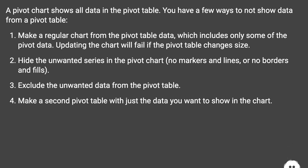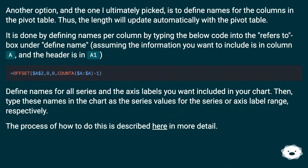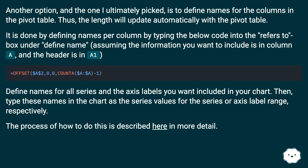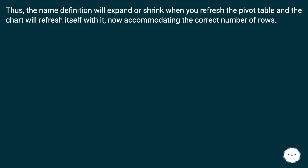Another option — and the one ultimately recommended — is to define names for the columns in the pivot table, so the length will update automatically with the pivot table. This is done by defining names per column, typing the appropriate formula into the 'refers to' box under Define Name, assuming the data is in column A with the header in A1. Define names for all series and axis labels you want in the chart, then enter these names as the series values or axis label ranges in the chart. The name definition will expand or shrink when you refresh the pivot table, and the chart will refresh itself with the correct number of rows.